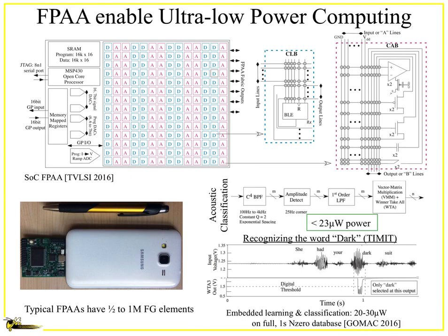When we talk about field programmable analog arrays, there's a long history, but we're particularly focusing on a structure for large-scale FPAAs. These have been used in a number of embedded structures, including acoustic classification at microwatt-level power levels, as well as embedded learning and classification. The structure is composed of multiple analog and digital components, a digital infrastructure processor core, and the remaining programming infrastructure.